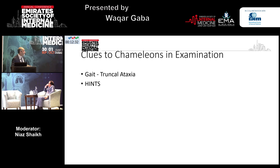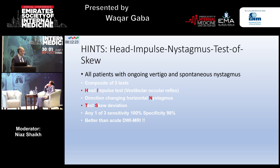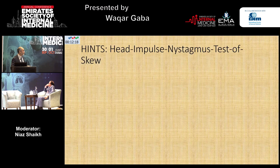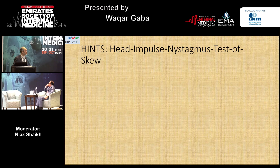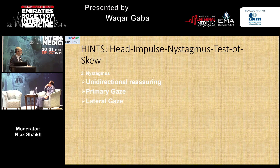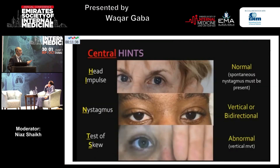I'm sure you're all familiar with the HINTS exam. HINTS is Head Impulse, Nystagmus, Test of Skew. An abnormal head impulse — where you hold the head and briskly move it 30 degrees to center and look for a catch-up saccade — if positive, is reassuring and peripheral. Nystagmus in primary and lateral gaze: unidirectional is reassuring. Test of skew is cover-uncover; no vertical skew deviation is reassuring. In summary, HINTS is central — and therefore concerning for stroke — if head impulse is normal, nystagmus is vertical or bidirectional, or test of skew is abnormal. This is better than acute DWI MRI.